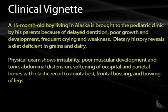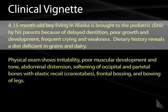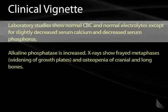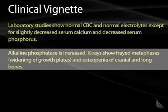There are defects in this process as well, illustrated in the following clinical vignette. A 15-month-old boy living in Alaska presents with delayed dentition, poor growth and development, frequent crying, and weakness. His diet is deficient in grains and dairy products. Physical exam shows irritability, poor muscle development and tone, abdominal distention, softening of the occipital and parietal bones with elastic recoil (craniotabes), frontal bossing, and bowing of the legs. Labs show decreased serum calcium and phosphorus, increased alkaline phosphatase, and X-rays show frayed metaphyses, widening of growth plates, and osteopenia.